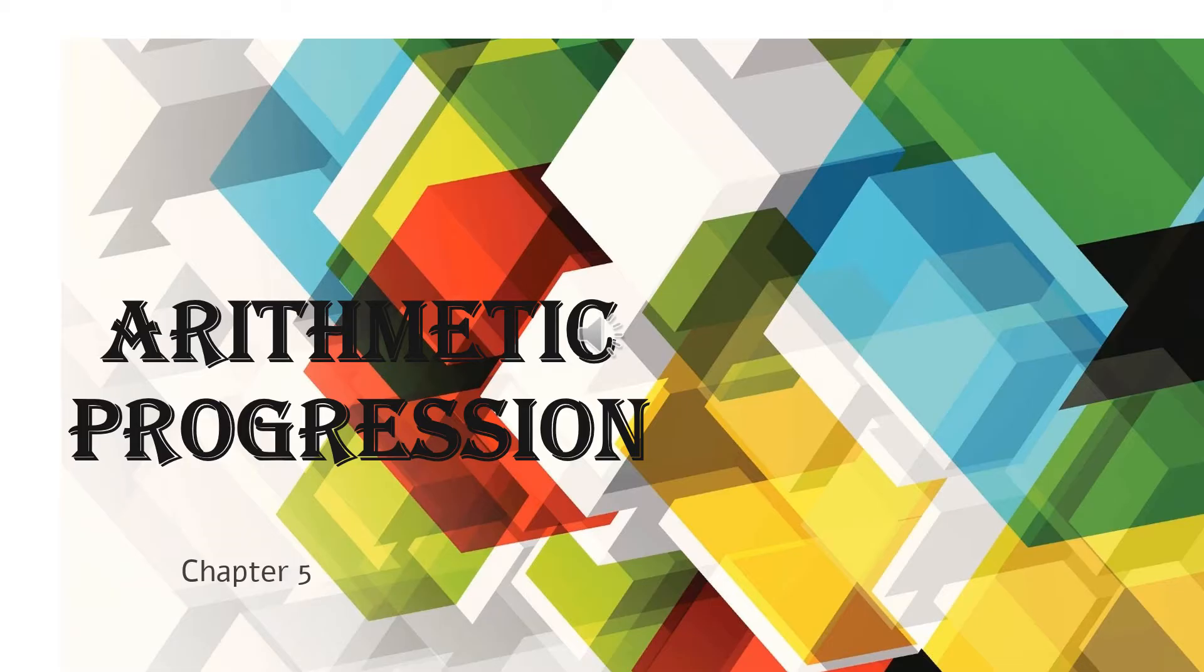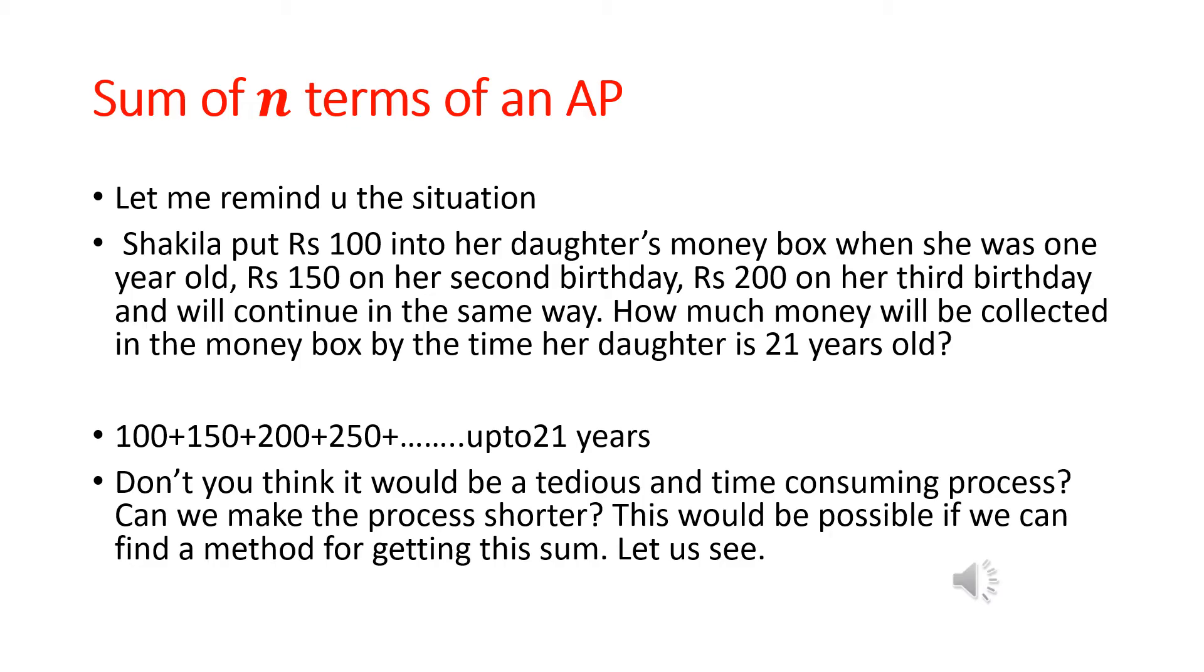Let us consider a situation. We have talked about this particular case in the earlier video also. There is a lady Shakila who keeps saving money for her daughter. On her first birthday, she put 100 rupees in her money box. On the second birthday, she put 150 rupees. On the third birthday, she put 200. She kept saving money every year with an increment of 50 rupees: 100, 150, 200, 250, 300, 350, until her daughter was 21 years of age.